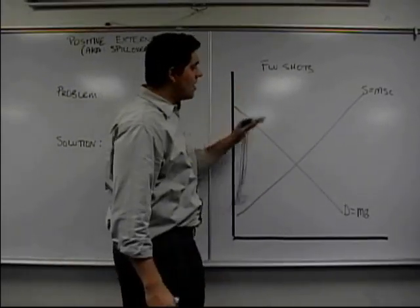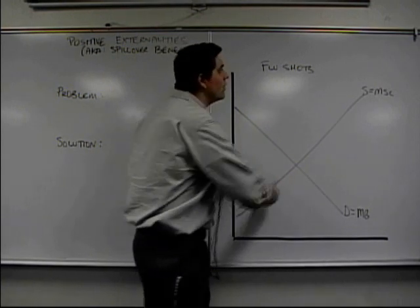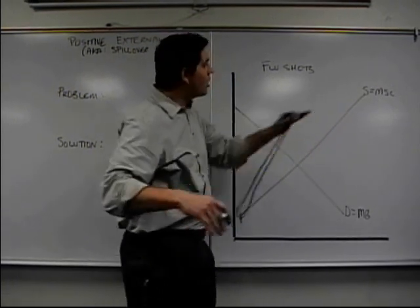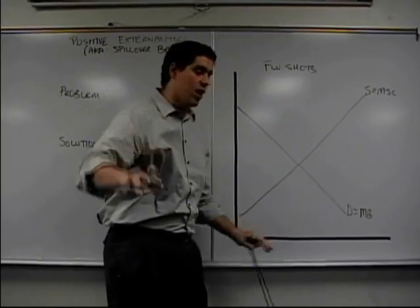Here we go, we're looking at flu shots, demand, supply. Now, the supply curve, as you already know, is the marginal cost. We're going to call that the marginal social cost. Supply curve is not going to change in this scenario at all.